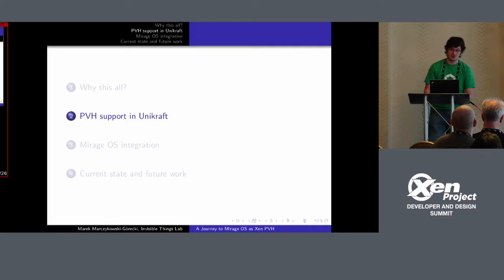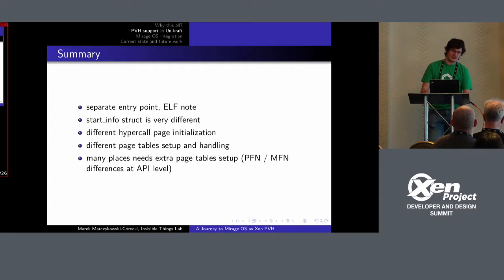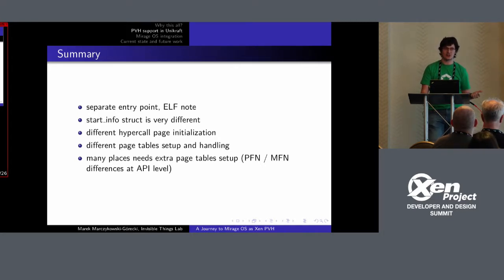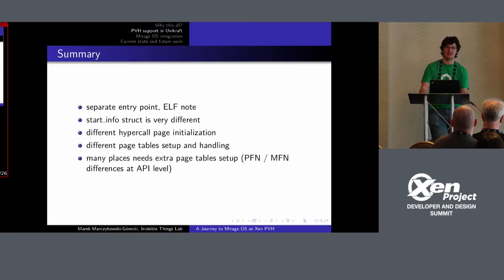So what do we need to do to have PVH in Unicraft? There are a couple of things. First, the binary itself needs some additional ELF notes and a separate entry point. The start info structure in PVH is very, very different. A lot of information that in PV you get in the start info structure, you need to obtain using a different API in PVH. This applies to XenStore, to console, and there's also a different method to get a hypercall page. There is also slightly different memory handling, which includes page table updates — you don't have an MMU update hypercall anymore in PVH.